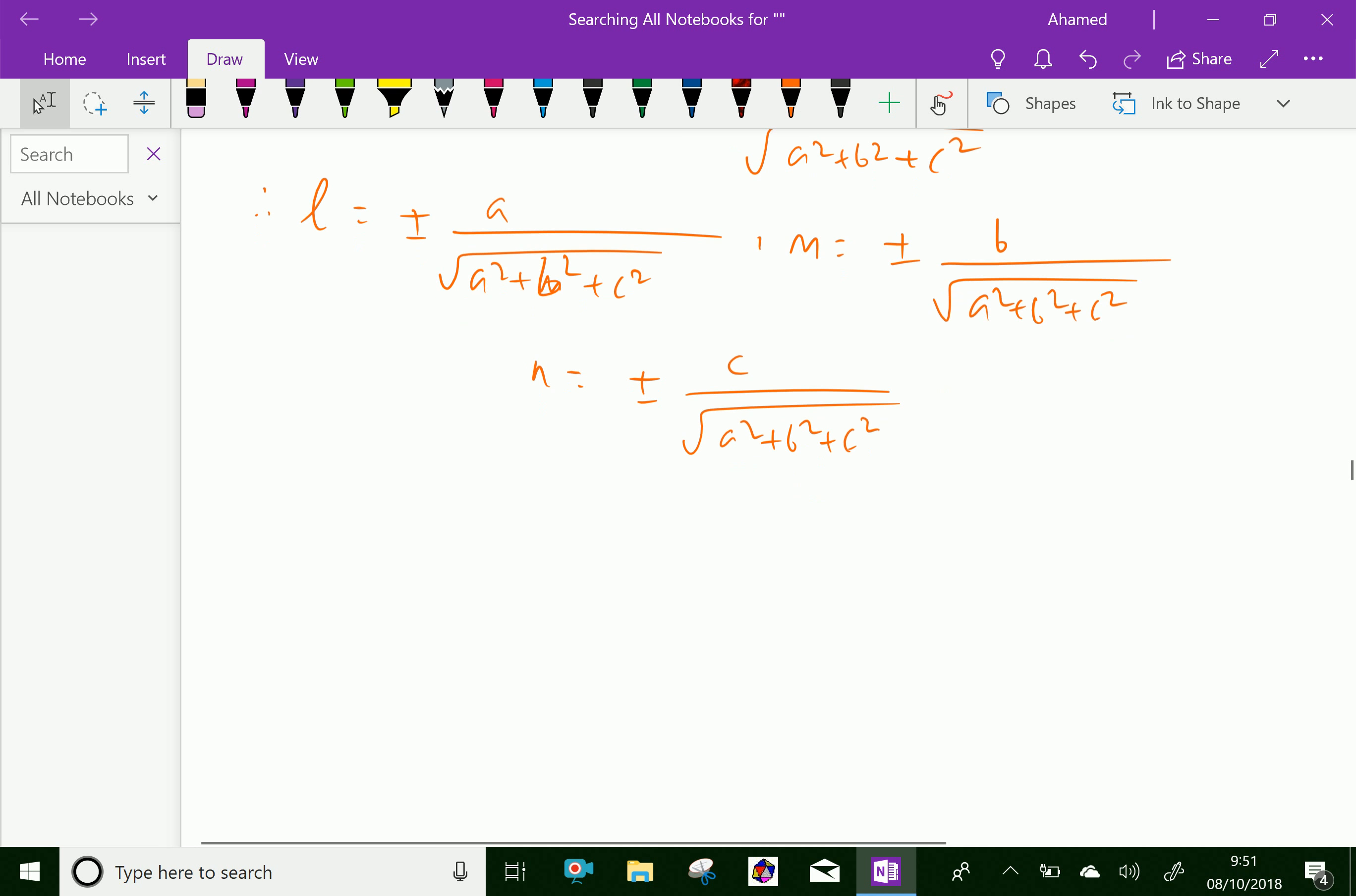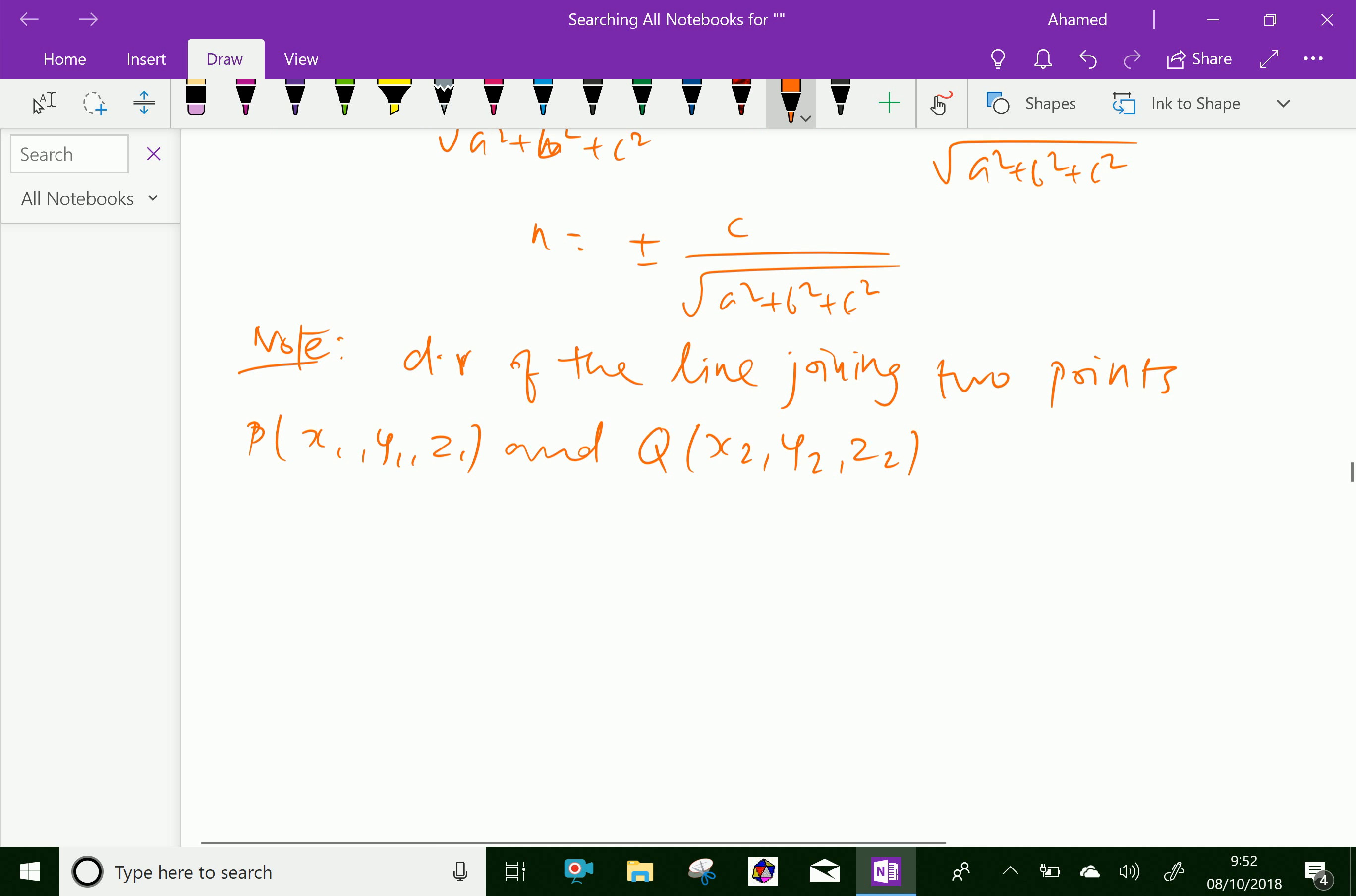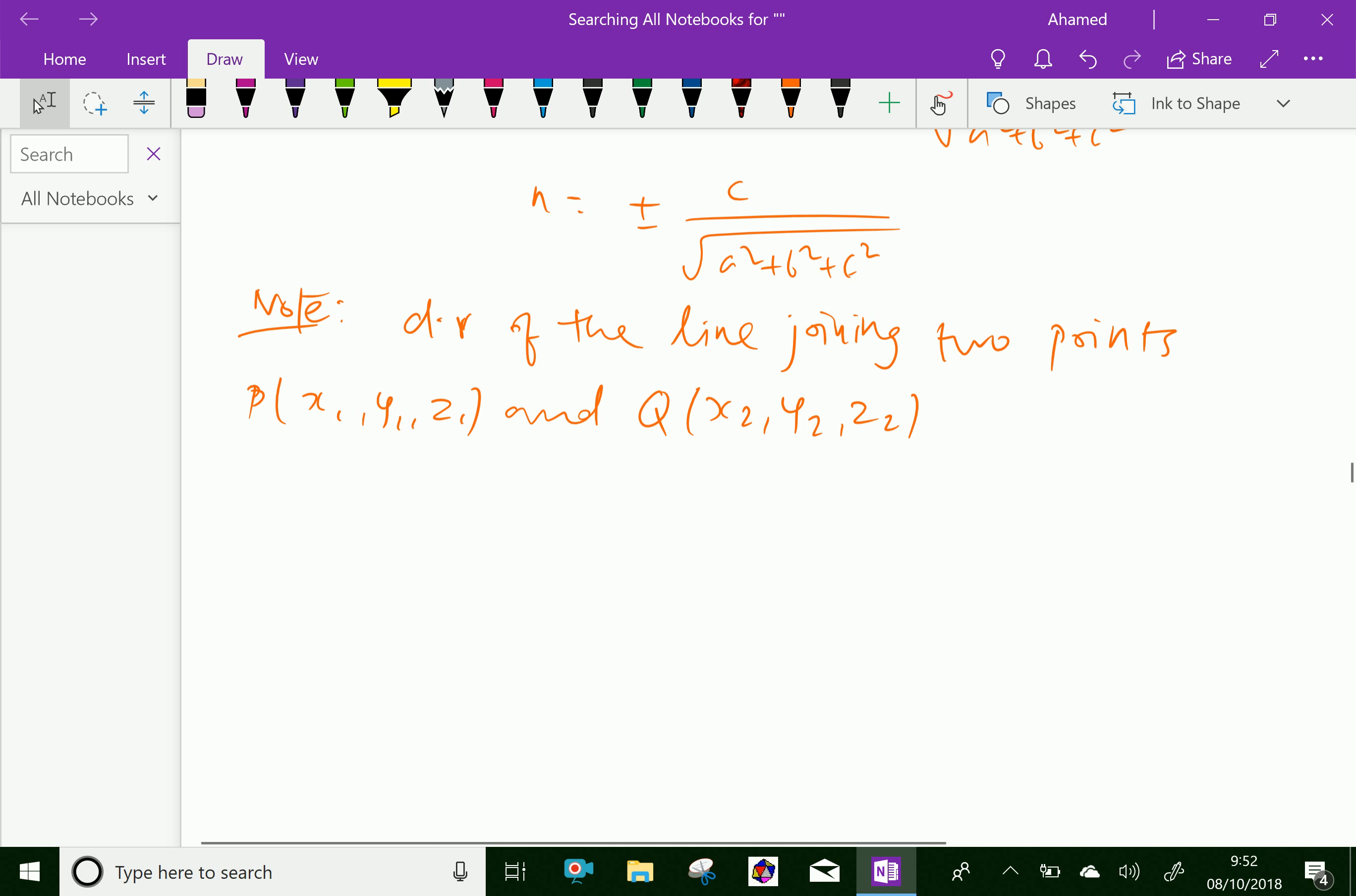Now, note this point. The direction ratio, DR, of the line joining two points, suppose P of X1, Y1, Z1 and Q of X2, Y2, Z2, are given as a subtraction of respective terms, which are proportional to X2 minus X1, Y2 minus Y1, and Z2 minus Z1.